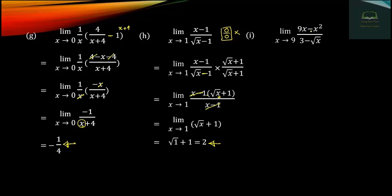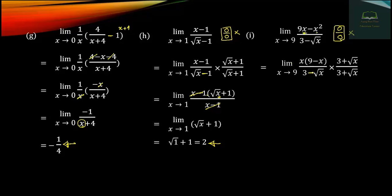If we substitute x equals 9, we get 81 minus 81 equals 0 in the numerator, and 3 minus the square root of 9 equals 3 minus 3 equals 0 in the denominator. This is a 0 over 0 indeterminate form, so we need to rationalize. We multiply by 3 plus the square root of x.